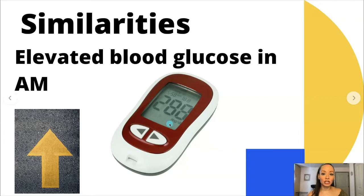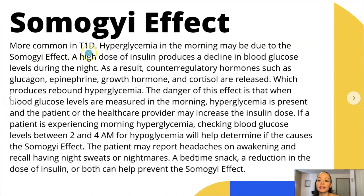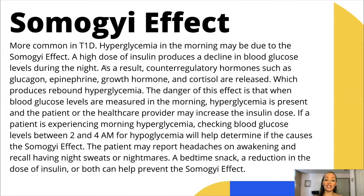With the Somogyi effect, it's more common in type 1 diabetes. Hyperglycemia in the morning may be due to the Somogyi effect. A high dose of insulin produces a decline in blood glucose levels during the night. What occurs is they got a high dose of insulin maybe at bedtime, and then their blood sugar crashes. Our body's job is to keep us alive at all costs, so if it crashes, the body releases a surge of hormones to try to counteract the effects and raise that blood sugar.